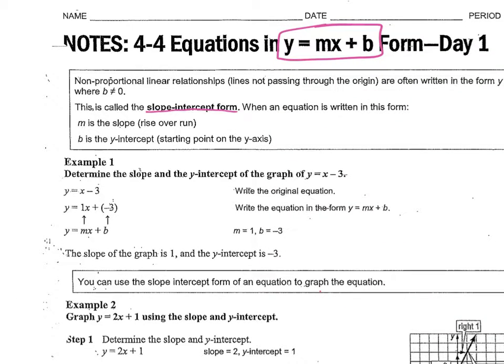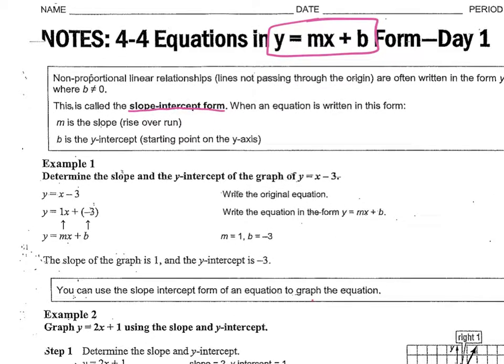It's called slope-intercept form, and when an equation is written in this form, m is your slope. That's what you guys have been finding for the past week.